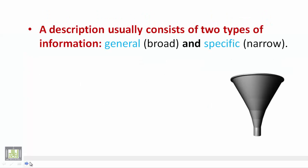A description usually consists of two types of information. The first type is general information, and we usually start with general information at the beginning of the description. Then we move to the second type, which is a specific or narrow description after giving the general information.